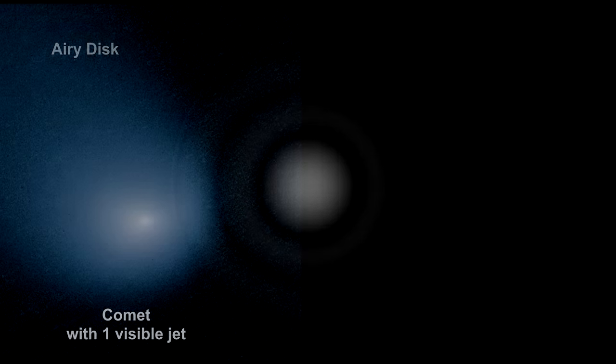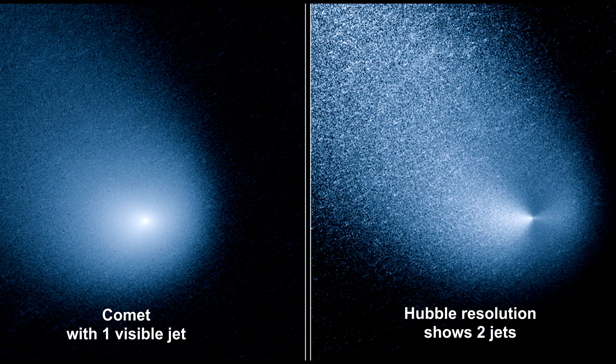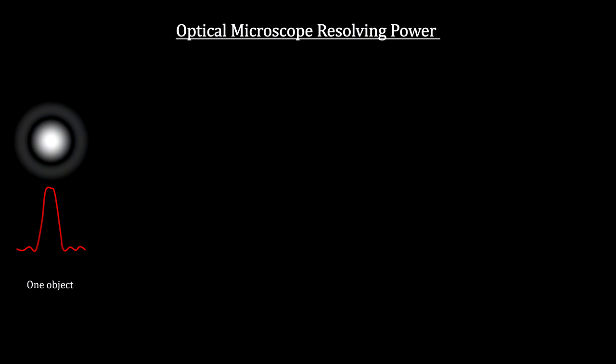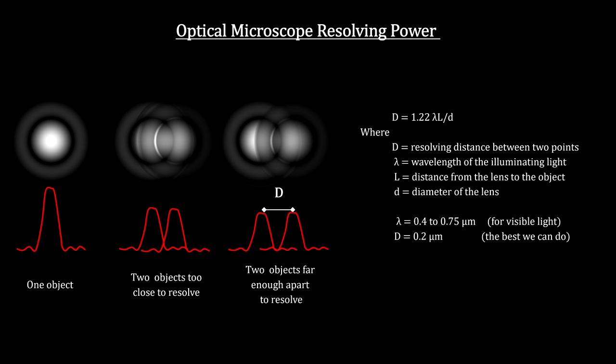Because of diffraction, instead of seeing points, each point is spread out into a disk called an airy disk. The resolving power of any optical instrument is its ability to produce separate images for two adjacent points. This resolving power of optical microscopes is about 0.2 micrometers. The bottom line is that you can't see a thing that is smaller than the wavelength of the light used to illuminate it.